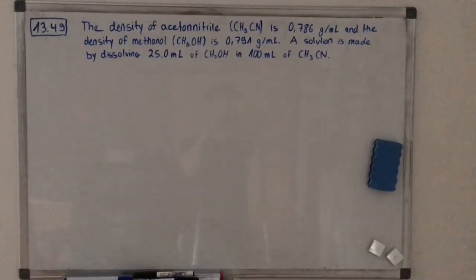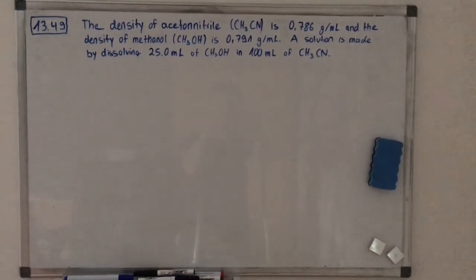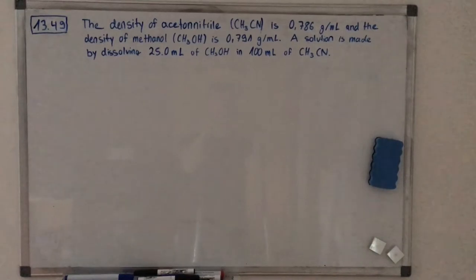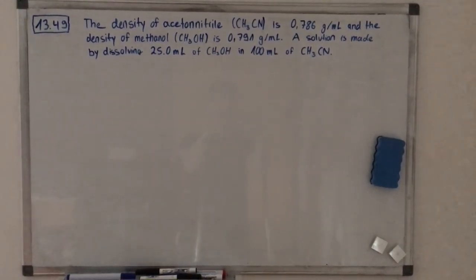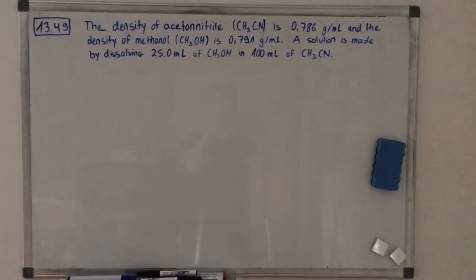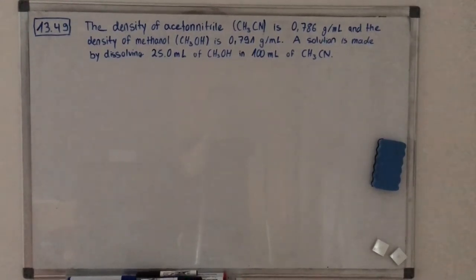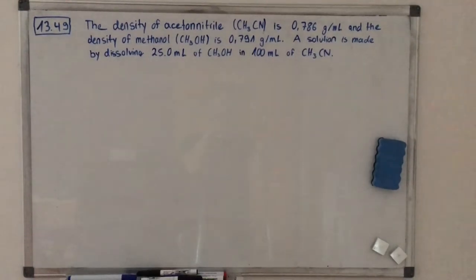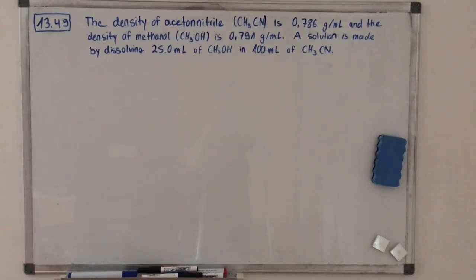Hello everybody and welcome to this tutorial video in physical chemistry. My name is Felix Langerscheidt and I'm going to solve task number 1349. The density of acetonitrile is 0.786 g per milliliter and the density of methanol is 0.791 g per milliliter. We have a solution made by dissolving 25 milliliters of methanol in 100 milliliters of acetonitrile, and we have three tasks to solve.